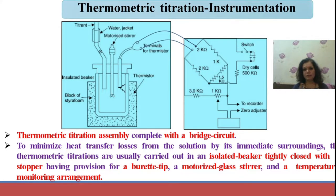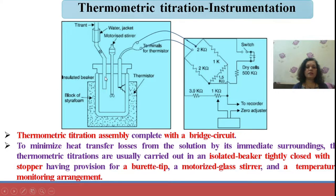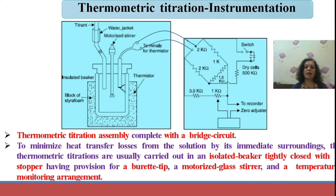This is the instrumental setup of thermometric titration. It includes a Styrofoam block which acts as an insulator, inside which a beaker containing the analyte is kept. A burette delivers the titrant into the analyte. A motor-driven stirrer allows mixing of the analyte and titrant. A thermistor or thermocouple is attached to a Wheatstone bridge network, which is sensitive enough to measure temperature differences of 0.1–0.2°C during the reaction.